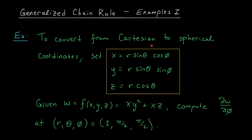To convert between Cartesian and spherical coordinates we can use these three formulas: x equals r sine theta cos phi, y equals r sine theta sine phi, and z equals r cos theta. At this stage you're not expected to have these formulas memorized, and you're not expected to know exactly what r, theta, and phi represent. We will be using spherical coordinates later in our course when we talk about triple integrals, and at that point all of this will be explained.